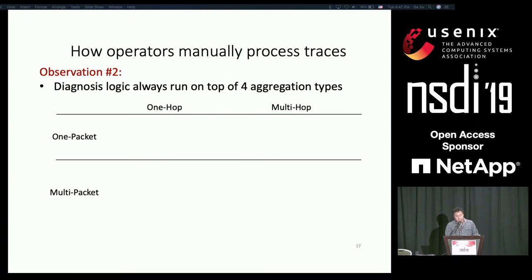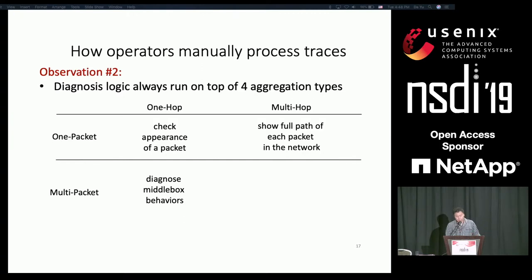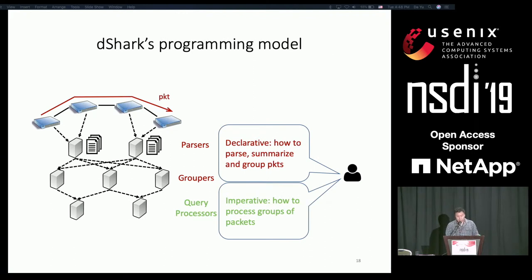Another observation is that we can group analysis logic along two axes. Operators may want to analyze each single packet on a specific hop to check the appearance of a packet, or analyze the multi-hop path of each single packet to show its full path through the network. Or they can verify multiple packets on a single hop to diagnose middlebox behaviors, or analyze complicated tasks by correlating multiple packets on multiple hops — especially useful for tasks requiring end-to-end information. Inspired by this, we abstract this into DShark's programming model, which contains two parts: a declarative part in JSON that specifies how packets are parsed, summarized, and grouped, and an imperative part in C++ to process groups of packets.